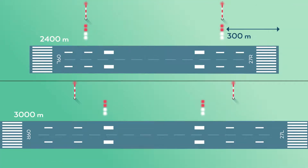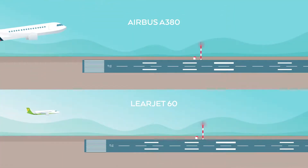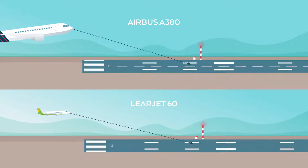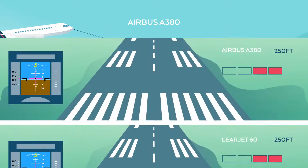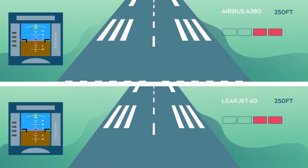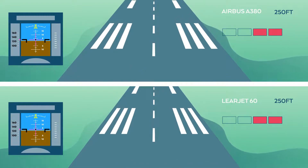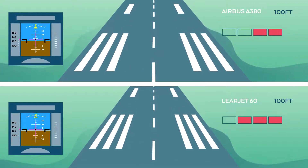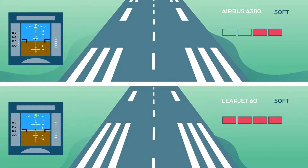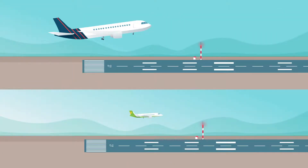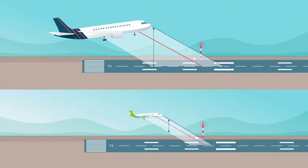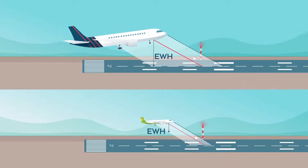Even on precision runways, glide slope transmitter and approach path indicator system locations vary by design criteria, and approach landing aids are calibrated for the largest certified aircraft category. Therefore, pilots may observe contradictory indications during the later stages of the approach, even if they are perfectly on the ILS glide slope — all because of aiming point selection and divergence between designed and actual eye-to-wheel heights.